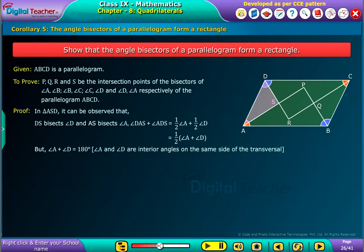But angle A plus angle D equal to 180 degrees, as angle A and angle D are interior angles on the same side of the transversal. Therefore, angle DAS plus angle ADS equal to 1 by 2 into 180 degrees, that equal to 90 degrees.